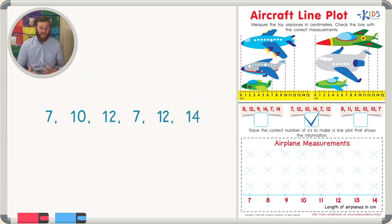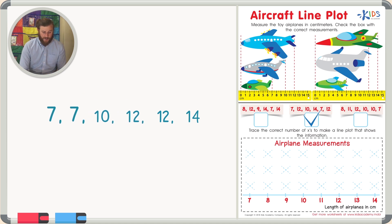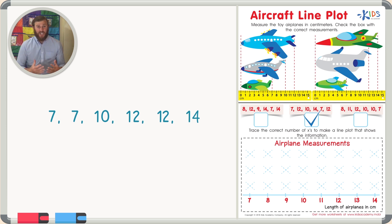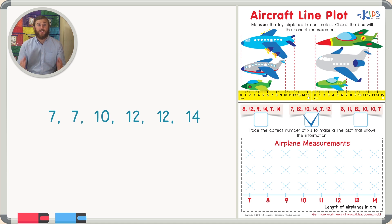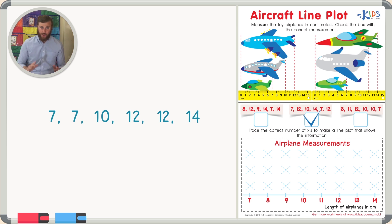When making a line plot, I like to put the numbers in order first: two sevens, one ten, two twelves, and a fourteen. Now it's time to make the line plot. There are two sevens, and each X represents one airplane, so under seven I'll trace two X's.